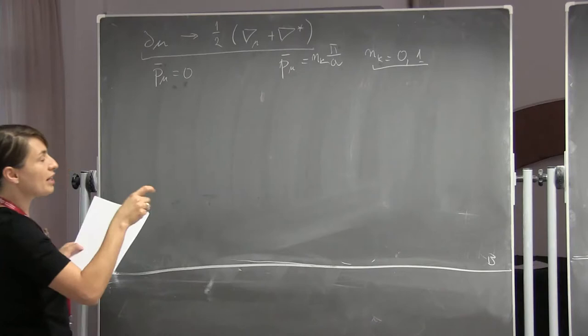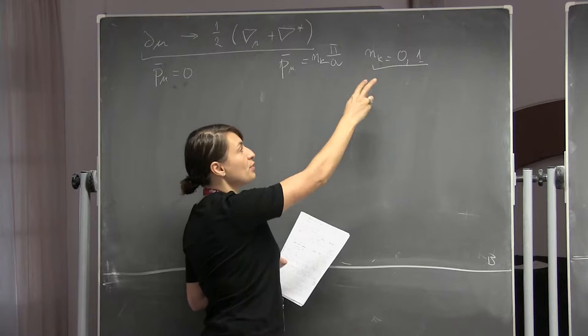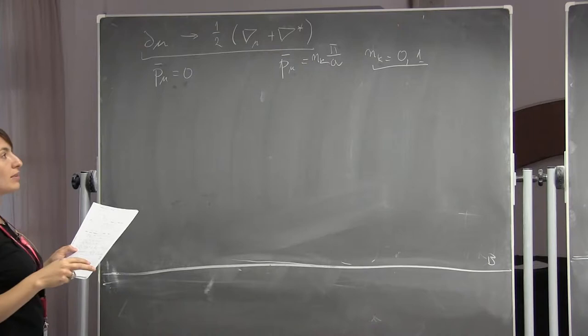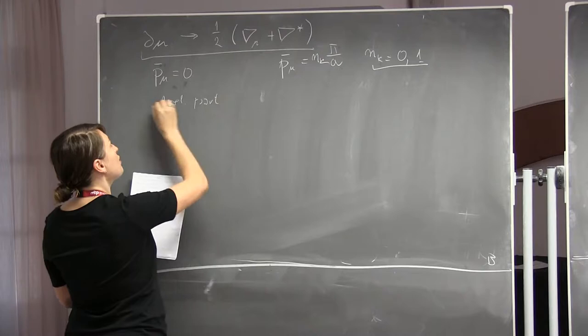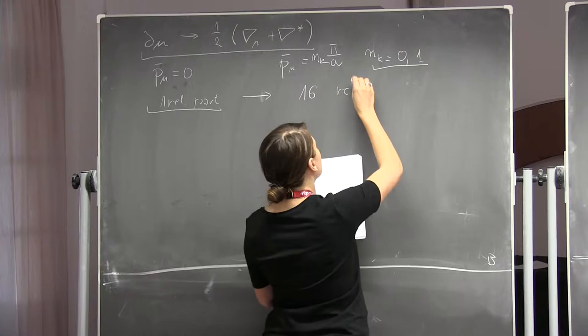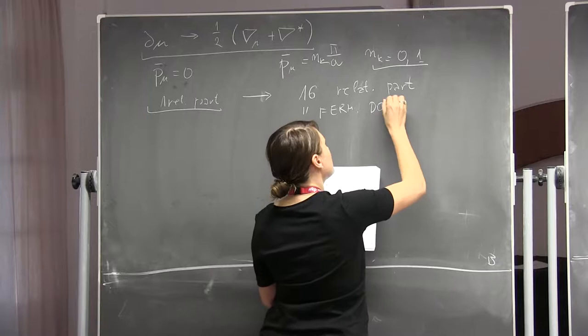There is no difference between space and time dimensions when working in Euclidean space-time. We get unwanted doublers in each of the four space-time dimensions. In total, instead of one relativistic particle described by the continuum version of the fermion action, we got 16 relativistic particles known as fermion doublers.